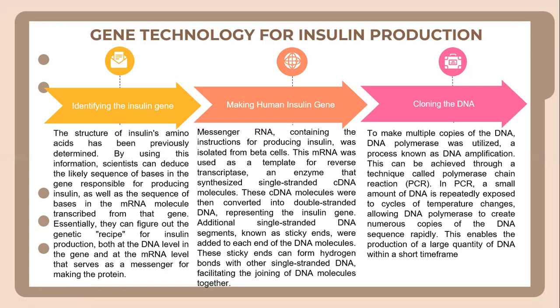During cloning, to make multiple copies of DNA, DNA polymerase was utilized in a process known as DNA amplification. This can be achieved through a technique called polymerase chain reaction, or PCR. In PCR, a small amount of DNA is repeatedly exposed to cycles of temperature changes, which allow PCR to create numerous copies of the DNA sequence, enabling the production of a large quantity of DNA within a short time frame.